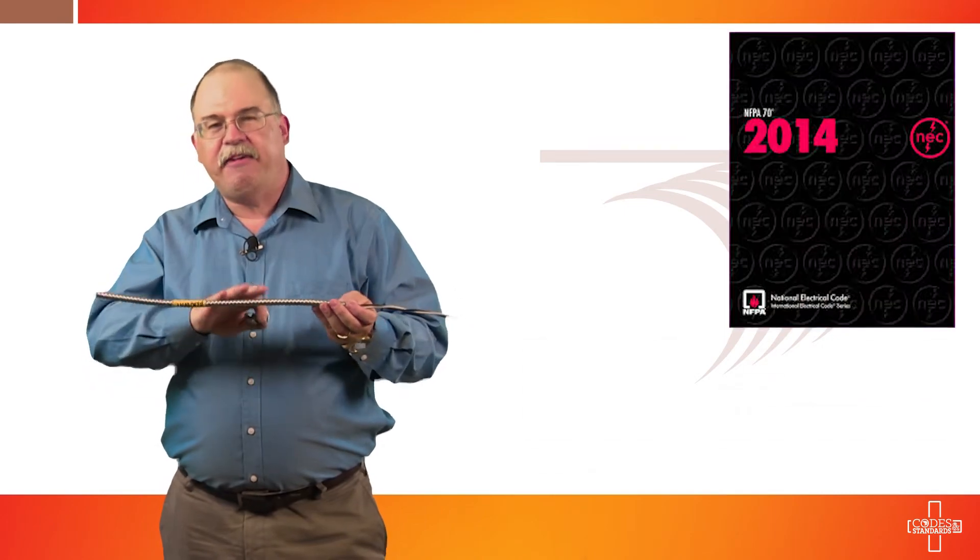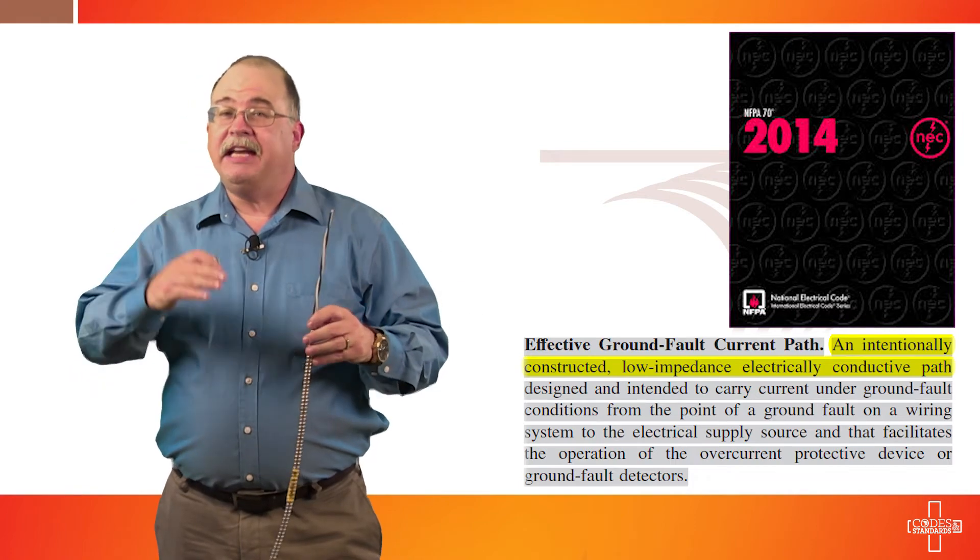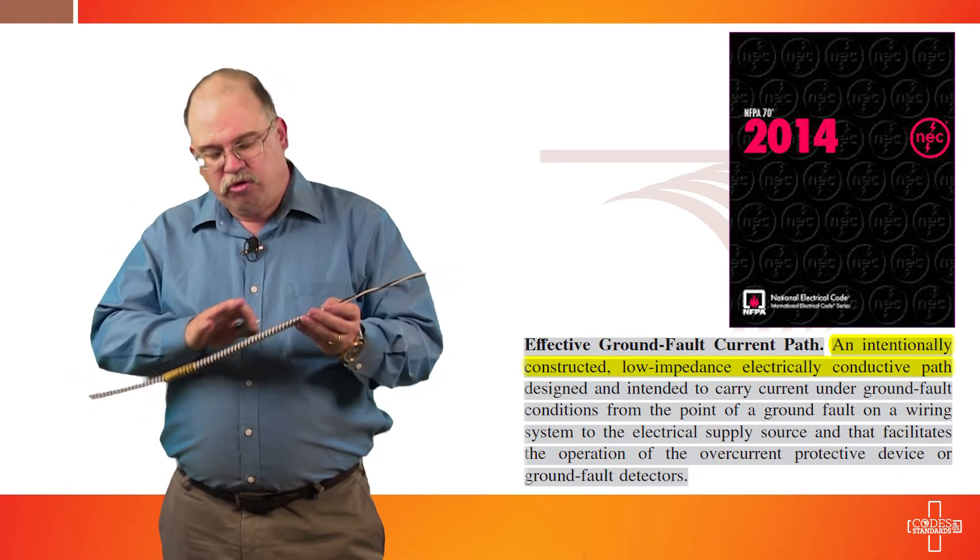Now this product is unique because it is a type MC, but it is a smart ground product. And as we talked about, that interior aluminum grounding slash bonding conductor makes intimate contact with all of the convolutions within this cable for the entire length of the cable. What it's doing is creating an effective ground fault current path in the metallic sheathing without the need for an interior insulated equipment grounding conductor. So this product serves as the effective ground fault current path as well as the equipment grounding conductor path, which is serving a grounding and a bonding type function.